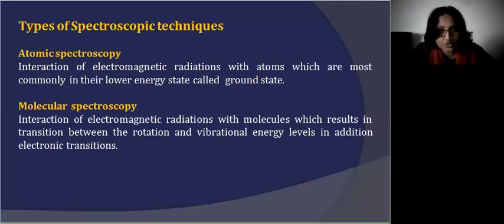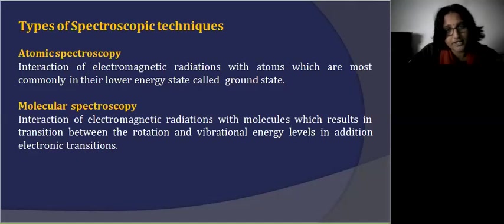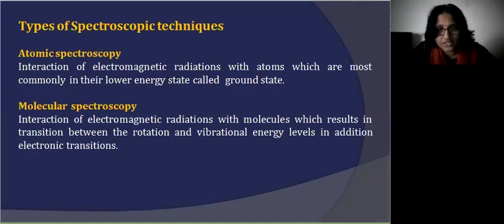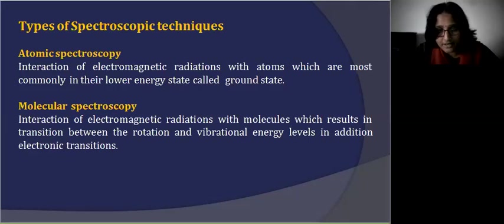There are two types of spectroscopy: atomic spectroscopy and molecular spectroscopy. Atomic spectroscopy is the interaction of electromagnetic radiation with atoms, which are most commonly in their low energy state or ground state. Molecular spectroscopy is the interaction of electromagnetic radiation with molecules, which results in transitions between rotational and vibrational energy levels, in addition to electronic transitions. When you hit a molecule with electromagnetic radiation, the molecules present in the sample will undergo rotational, vibrational, and electronic transitions, depending on the wavelength of electromagnetic radiation.